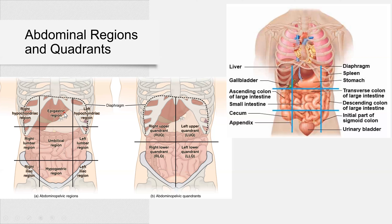The term epigastric — gastric means stomach — so epigastric is above the stomach, and hypogastric is below the stomach. Hypochondriac: chondria means cartilage, so it's below the costal cartilage. Iliac refers to the ilium, the biggest bone of your pelvis, so it's the iliac region. So those names have some meaning.